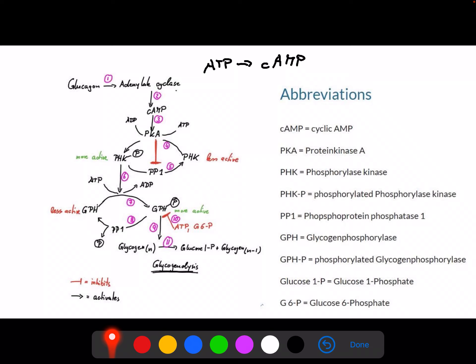We also have other regulation of glycogen phosphorylase. In the presence of ATP and glucose 6-phosphate, when the energy levels are already high, we don't need to remove glucose from glycogen. So we can inhibit this glycogen phosphorylase, and we don't need to tap into our glycogen resources.